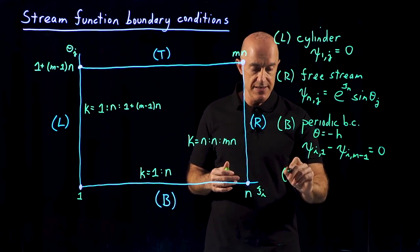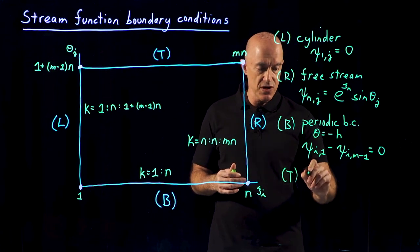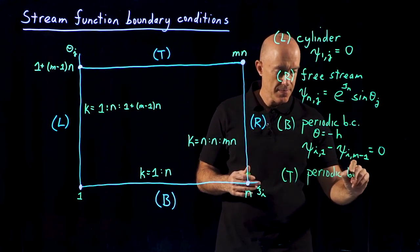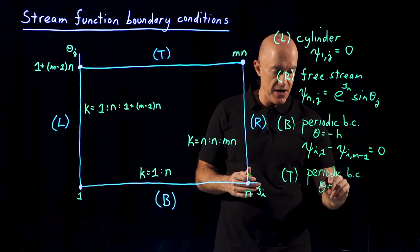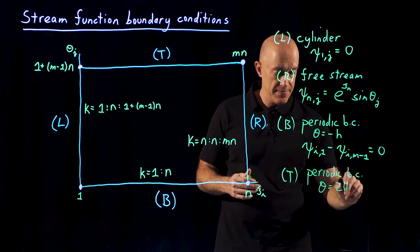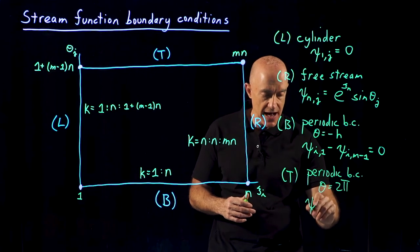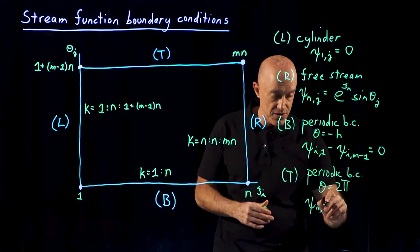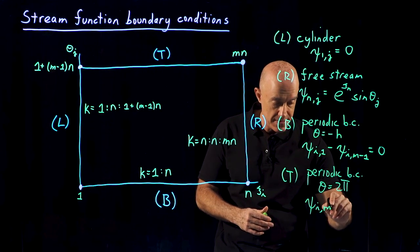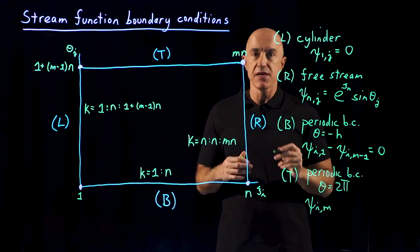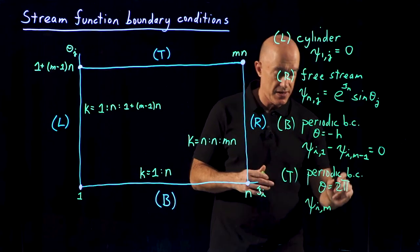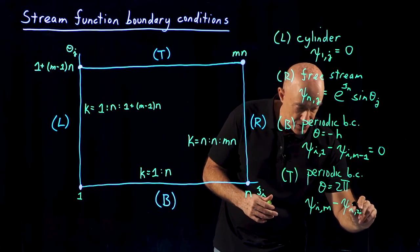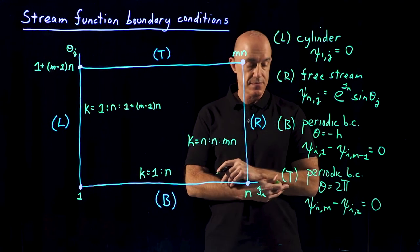Then the last one is the top, is also periodic boundary conditions. And the value of theta here at the top is 2 pi. So we have Psi for all values of i, and for the last value in theta, that's M. And then that's supposed to be equal to the second point. So that means minus psi i, 2 equals 0.